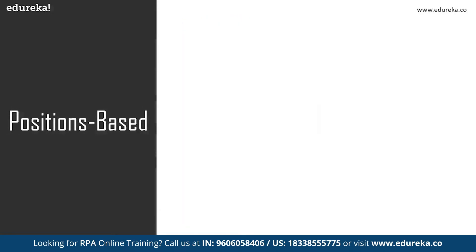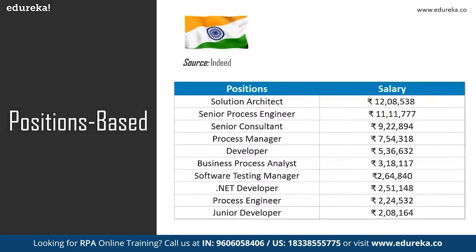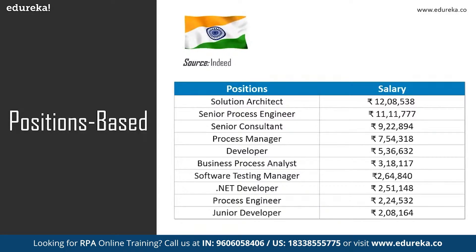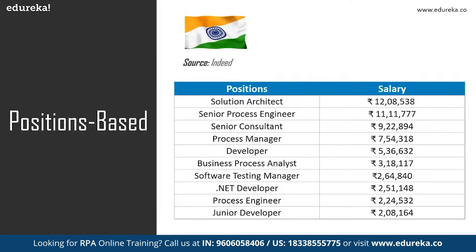In India, salary trends for various positions vary somewhat. A solution architect earns around 12 lakhs per year; a senior process engineer earns around 11 lakhs; a senior consultant around 9 lakhs; a process manager around 7,54,000; a developer starts at 5,36,000; a business process analyst earns around 10 lakhs; while the testing manager, .NET developer, process engineer, and junior developer roles earn around 2 lakhs. Some roles popular in the US are not as prominent in India.